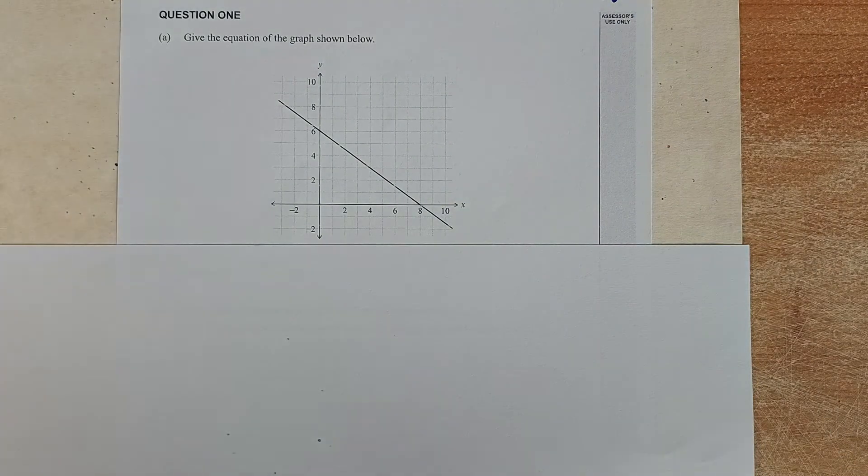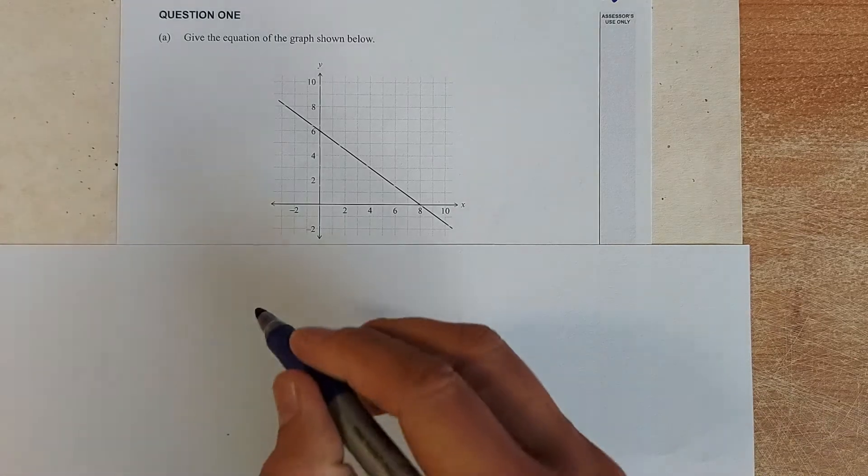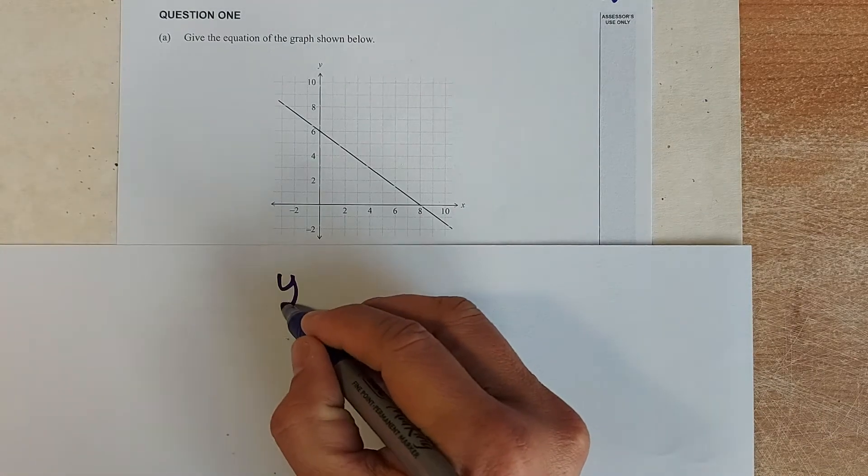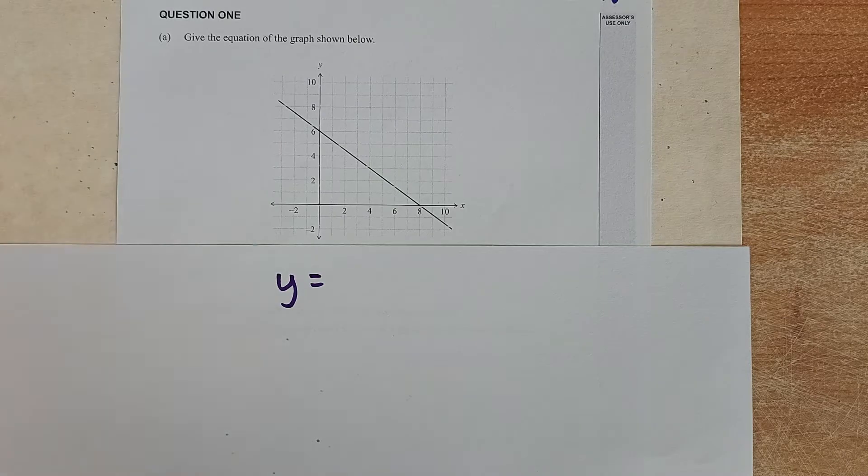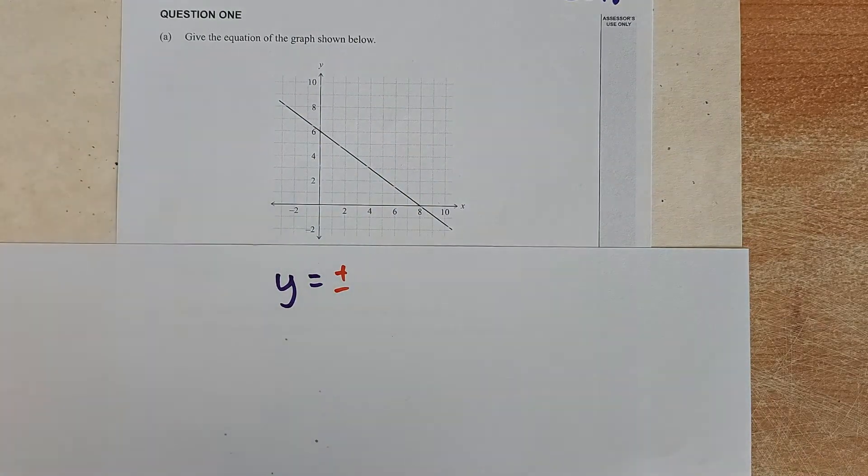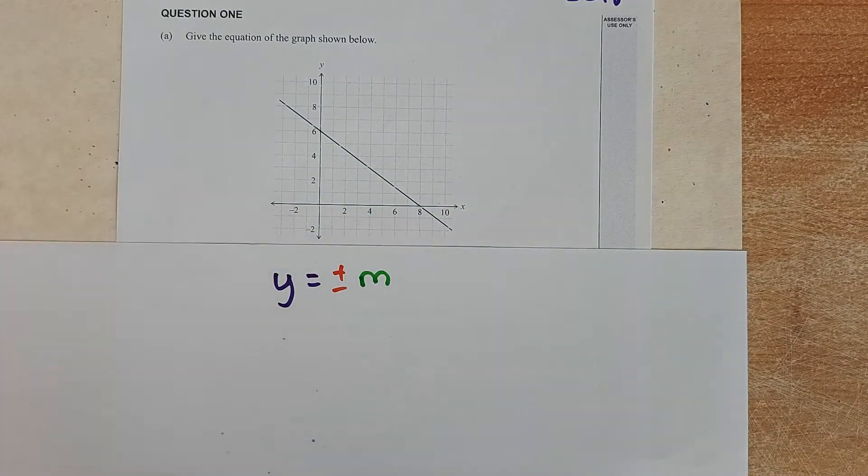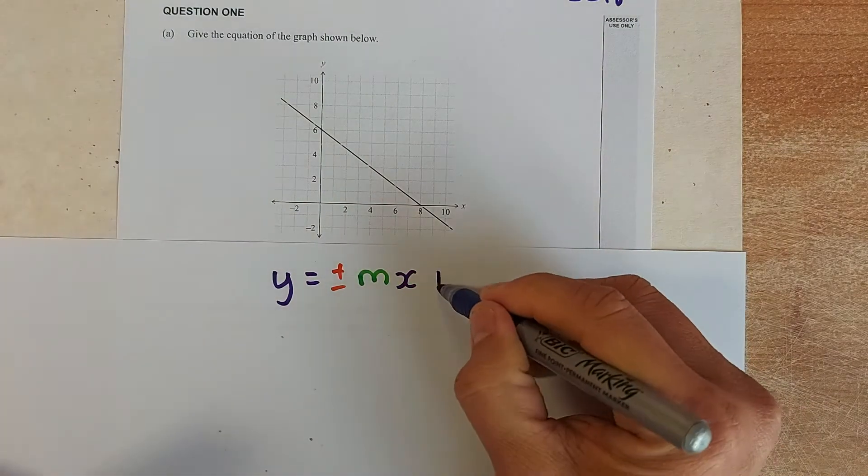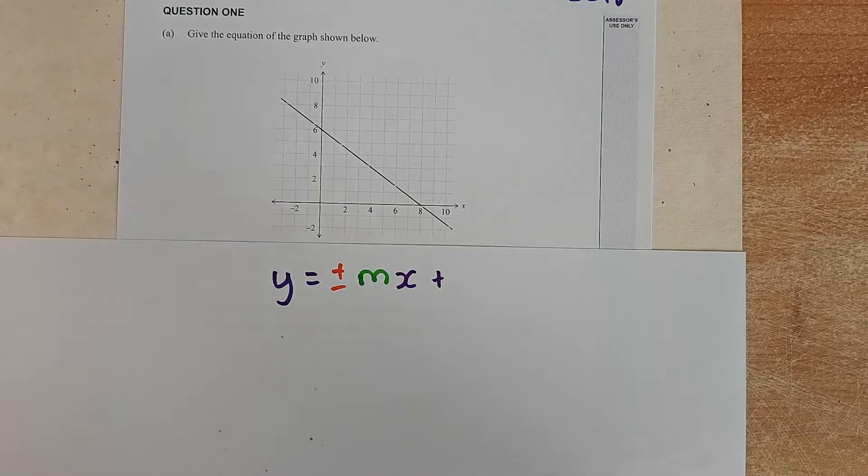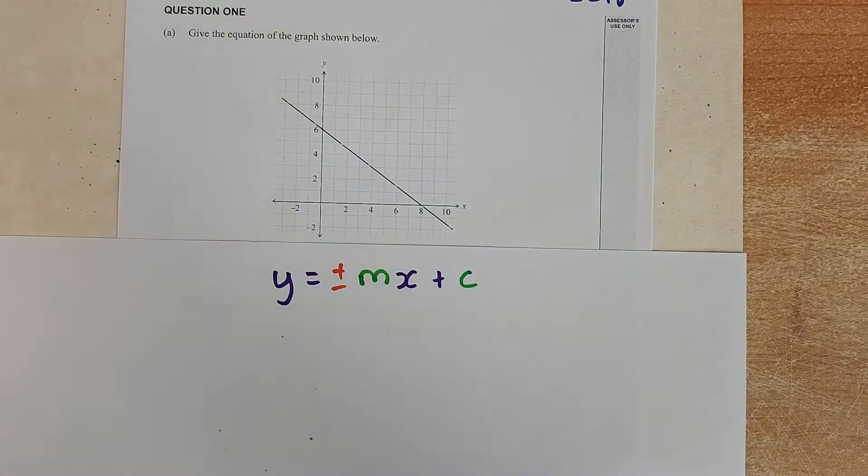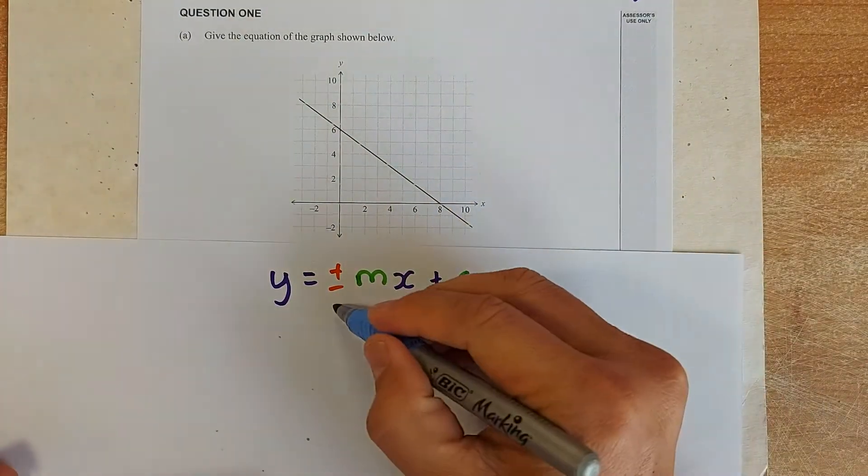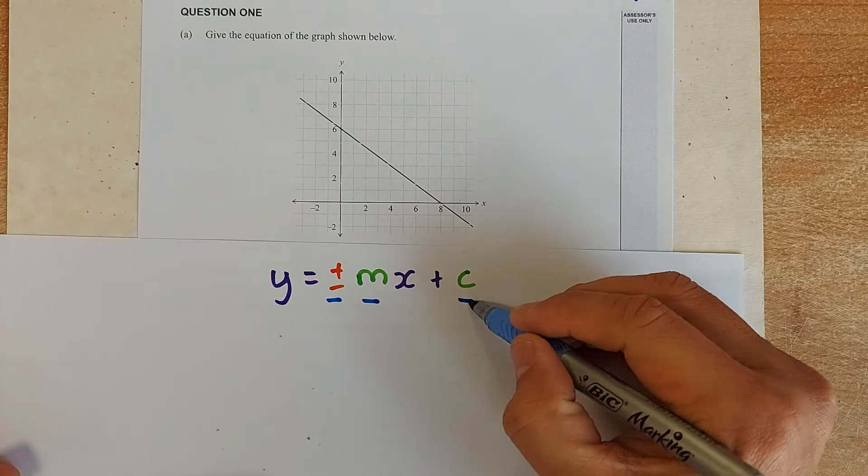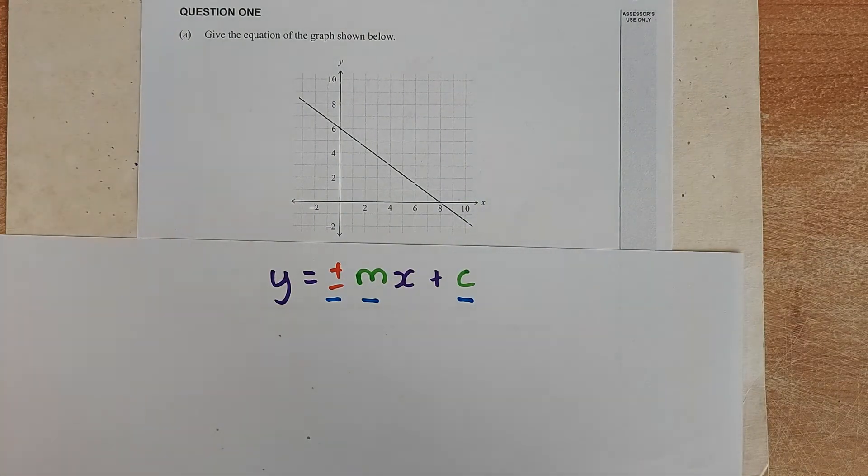So the first one we have a graph and the equation of a straight line has the following function. Y equals to either a plus or a minus, then you have M, then you have an X, and you have plus a C. So your job, you have to find three different unknowns. First you have to find whether it's a plus or minus. Second you have to find an M, and the last one you are going to find a C.